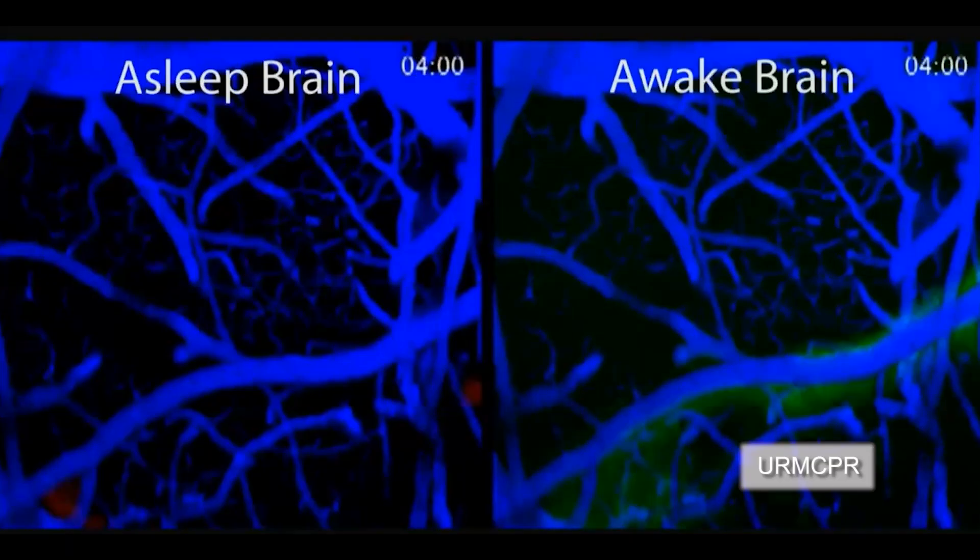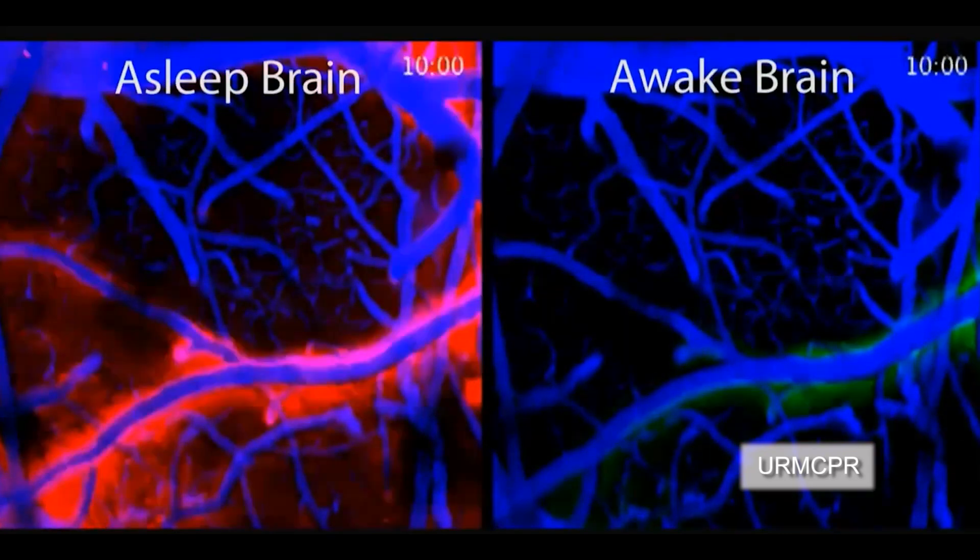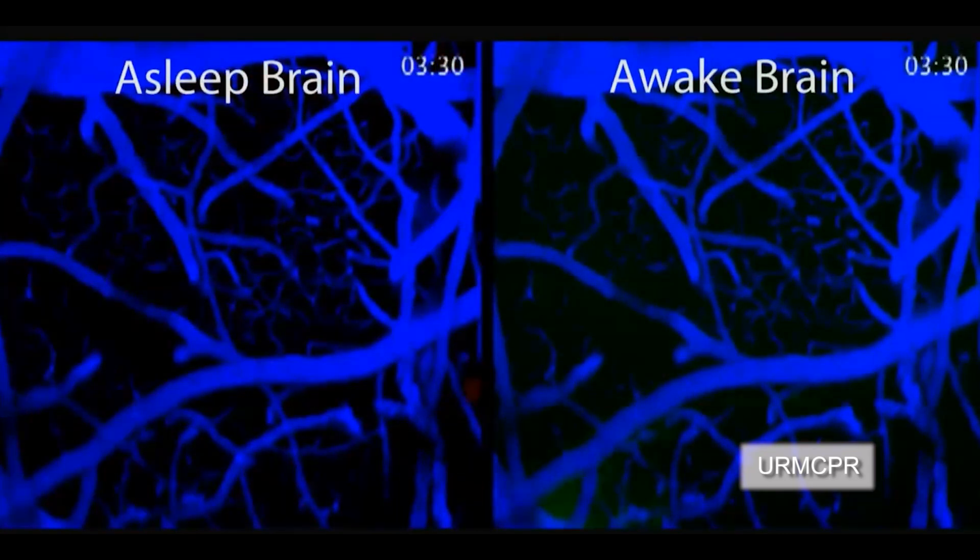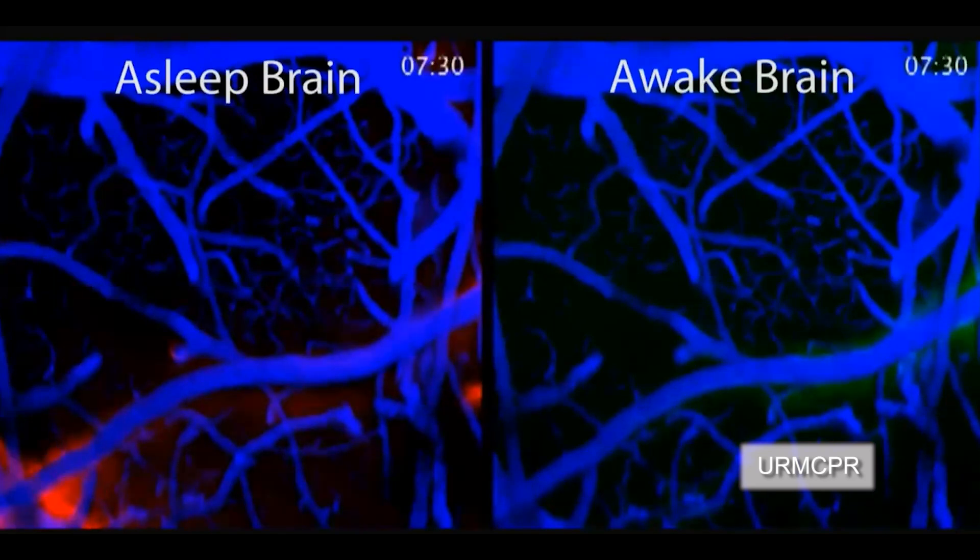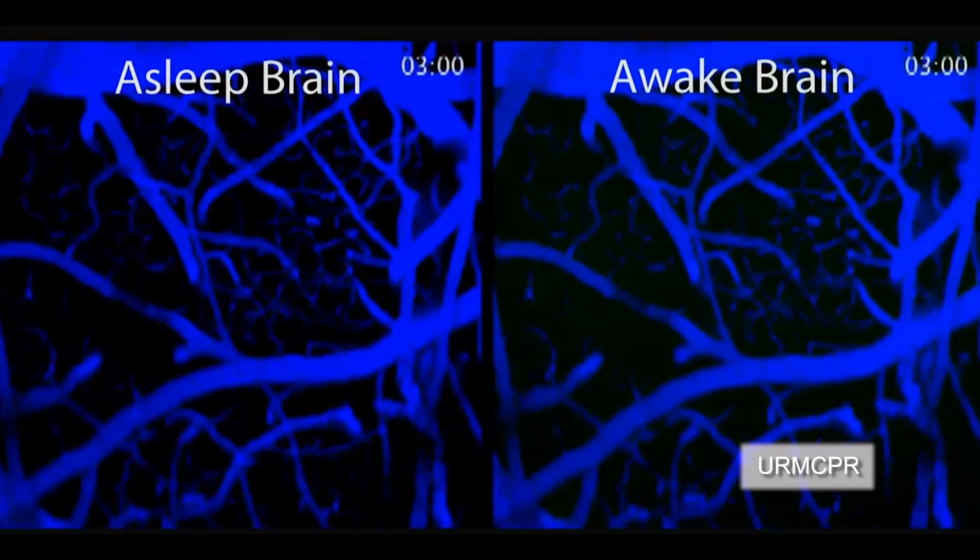An experiment carried out on mice by scientists at the University of Rochester Medical Center found that their glial cells carried 60% more cerebrospinal fluid when the mice were asleep.